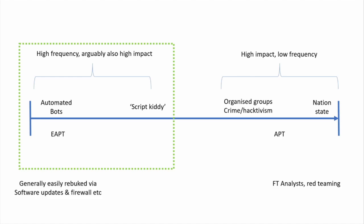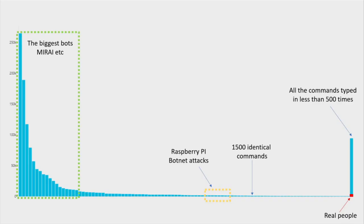We see thousands of these per second. This is a snapshot of all the commands entered into my sensor network over a couple of days. On the left you've got the massive Mirai-esque botnets typing the same commands over and over. Pretty much everything on screen is some kind of bot. But if you look at the tiny red speck at the end, those are real people. In about a month, 77 real people had hands on the keyboard attacking people — and these are 77 real people who make mistakes we can use to protect customers.